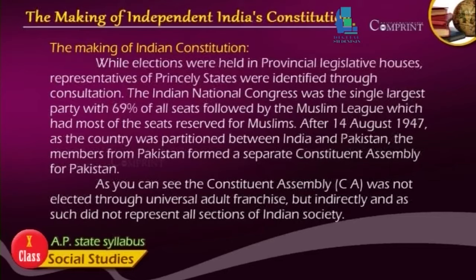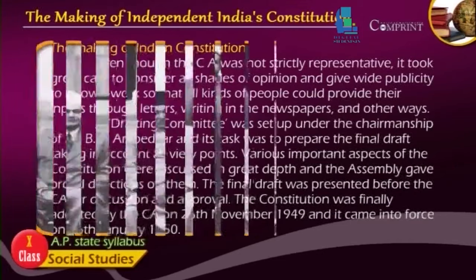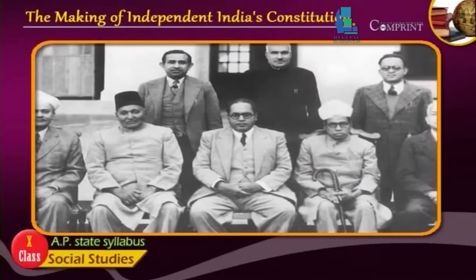The Constituent Assembly was not elected through universal adult franchise but indirectly, and as such did not represent all sections of Indian society. Even though the CA was not strictly representative, it took great care to consider all shades of opinion and give wide publicity to its own work so that all kinds of people would provide their inputs through letters, writing in the newspapers, and other ways.